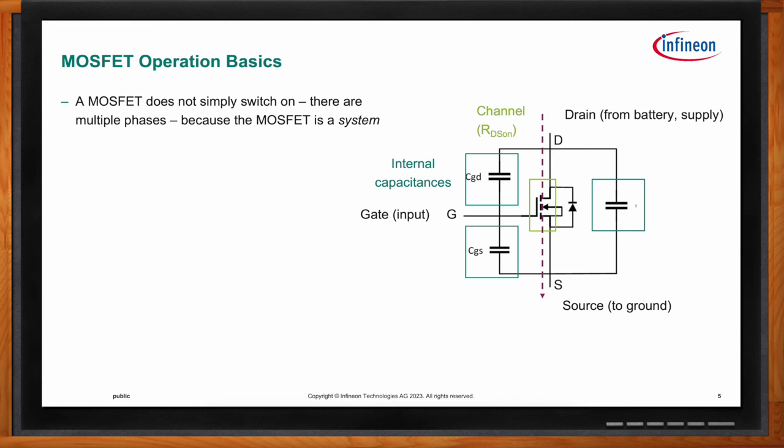MOSFETs also come with an inherent body diode across the channel. Sometimes current flows through this body diode, leading to high power dissipation. So the MOSFET doesn't just turn on because there are multiple phases — it truly is a system.